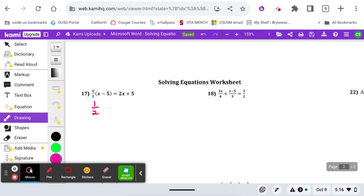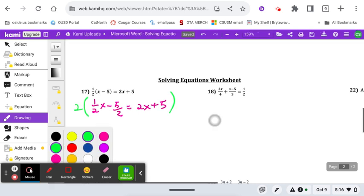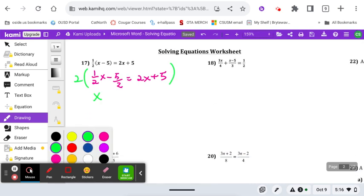Half of x, half of 5. Multiplying everything by 2 to get rid of that denominator. Those cross out, this crosses out, 2 times that, 2 times that.